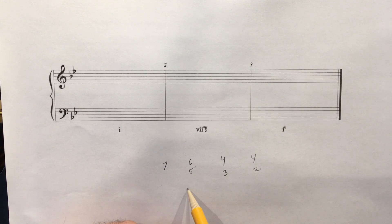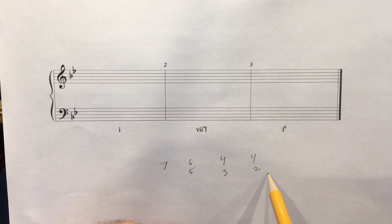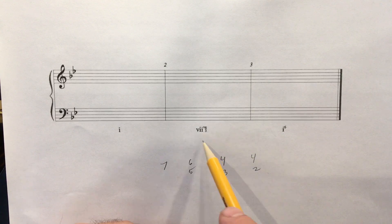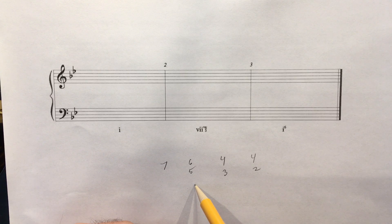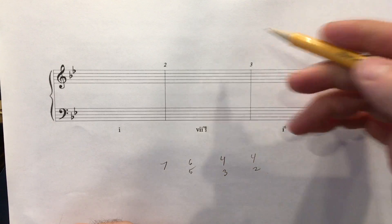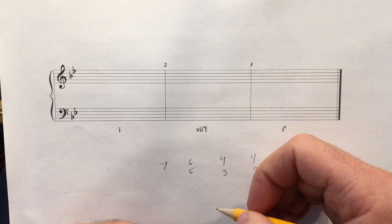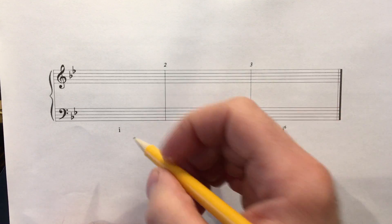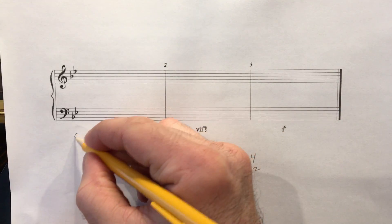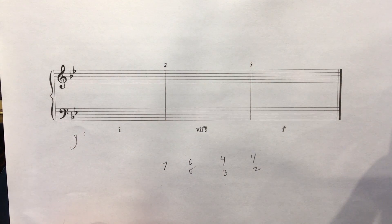Here's root position, 1st inversion, 2nd inversion, and 3rd inversion. In this case, this chord is sitting in 6-5 position, which is 1st inversion. The notes of the chord are, once again, 7, 2, 4, and 6. Here we are in this example in the key of G minor.